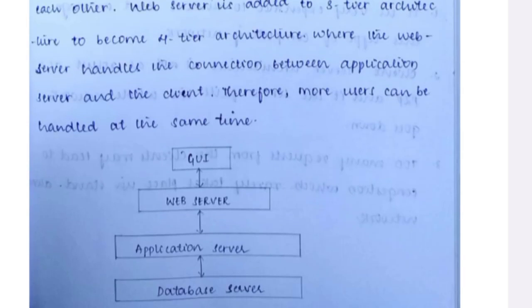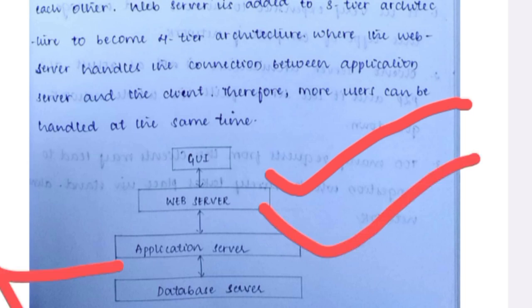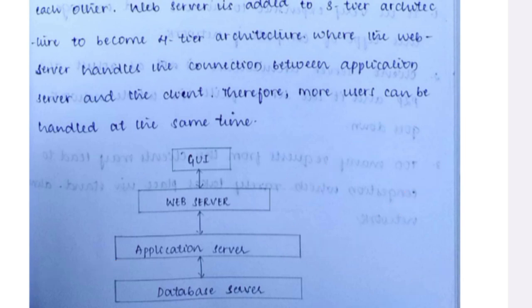In n-tier architecture, we have a web server, application server, and database server all as separate tiers. There are advantages and disadvantages to look into for each. That covers unit number five RDBMS. The advantages and disadvantages of DDBMS and client-server architecture are the two main questions — one will definitely be repeated in the exam. All the best for your examination!